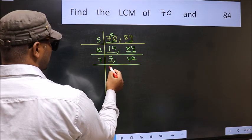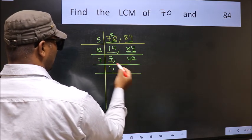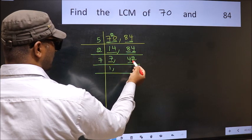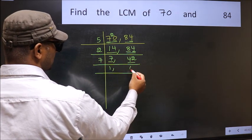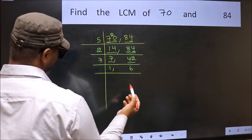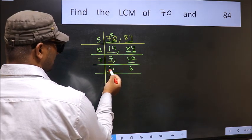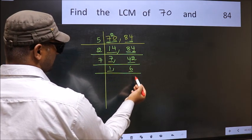7 is a prime number so 7 once 7. The other number 42. When do we get 42 in 7 table? 7 six 42. Now we got 1 here. So focus onto the next number 6.